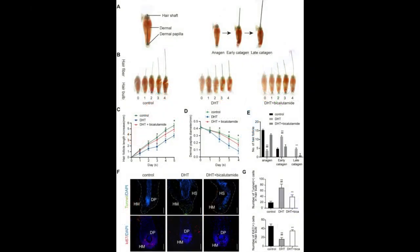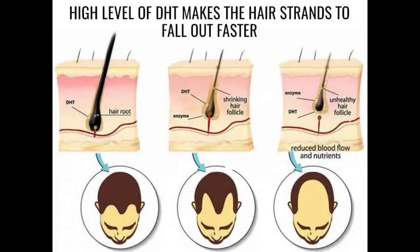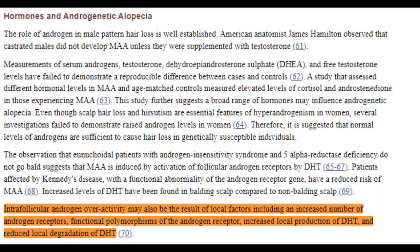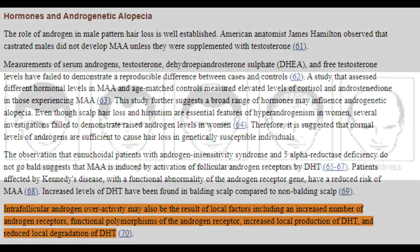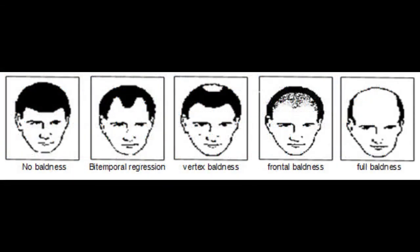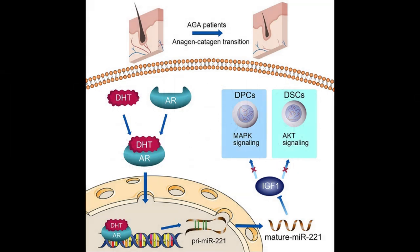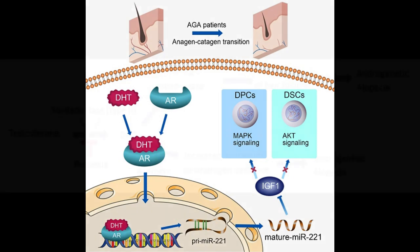Scalp DHT specifically refers to the DHT levels in the scalp tissue where the hair follicles reside. Elevated levels of DHT on the scalp directly correlate with miniaturization of hair follicles, a defining characteristic of androgenetic alopecia. When DHT binds to the androgen receptors in these follicles, it instigates a process that shrinks the follicles over time, leading to thinner hair and eventually hair loss.